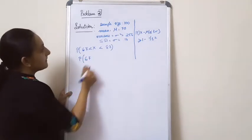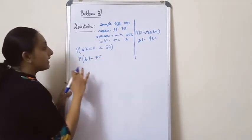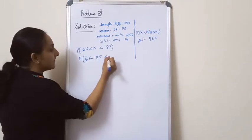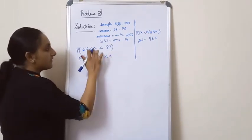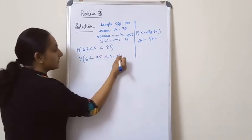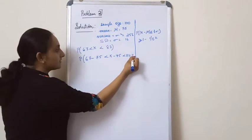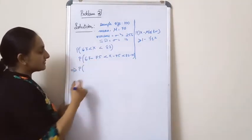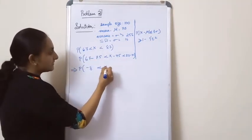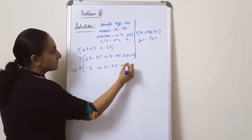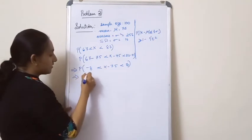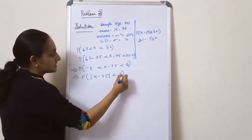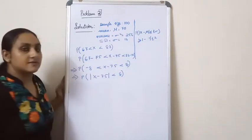Now, probability of 67 less than X less than 83. I have to make this into the form of Chebyshev's inequality. So I subtract 75 throughout: probability of 67 minus 75 less than X minus 75 less than 83 minus 75, which gives probability of minus 8 less than X minus 75 less than 8, which implies probability of |X minus 75| less than 8. Is this in the form of Chebyshev's inequality? Yes.